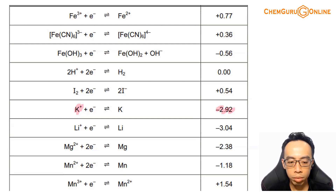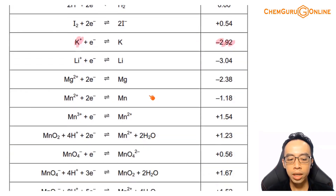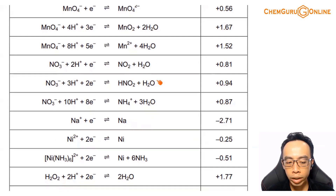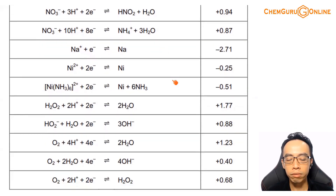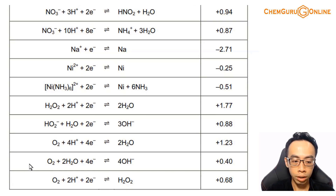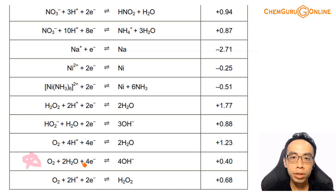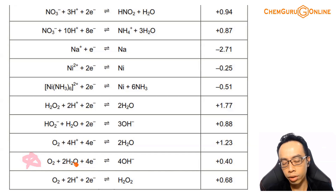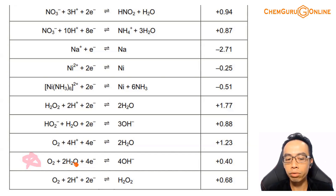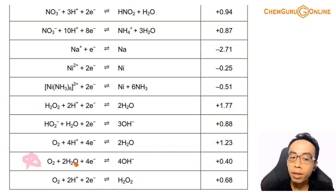Involving water, some may be confused because water appears in many half equations. When water is present together with other species, its purpose is actually for balancing — to balance oxygen or hydrogen. For example, O2 + 2H2O → 4OH⁻: water is on the left-hand side, but it is not the species being reduced — O2 is. So if water is together with another species, it's the other species that is oxidized or reduced.